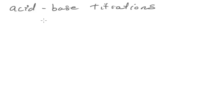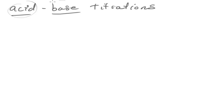In acid-base titrations, what happens is we react an acid with a base, and when we react this acid with the base, a neutralization reaction occurs. This is a volumetric form of analysis because we're reacting two solutions — one is an acidic solution and one is a basic solution. Through the known properties of the acid or the base, we can find out unknown properties about either the acid or the base, depending on which one we know about.